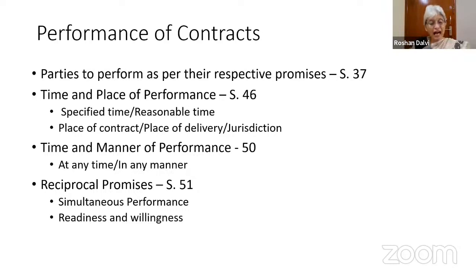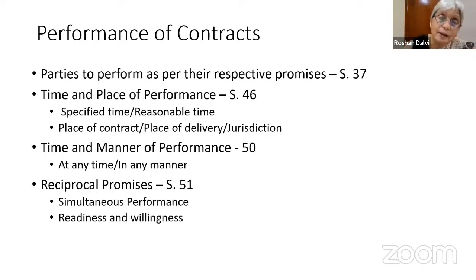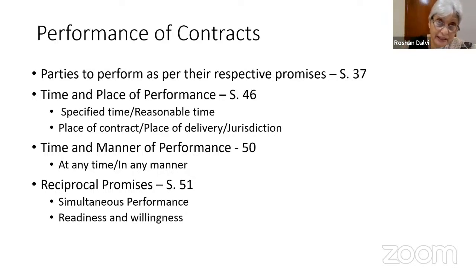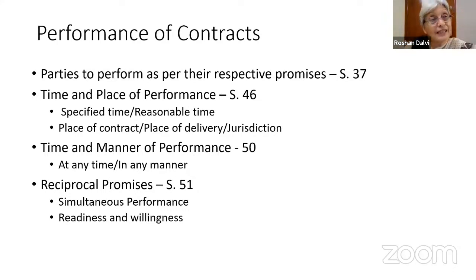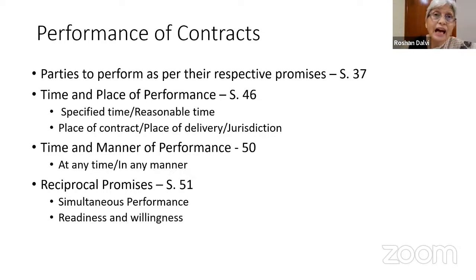When there are large, long contracts with many clauses, as is usually the case in commercial contracts, there are reciprocal promises — one party will have to do something and the other party will get a benefit. If either party does not perform their part of the reciprocal promises, the contract is gone. There is a breach and the other party can refuse to perform. For reciprocal promises, there should be readiness and willingness to perform. In specific performance suits, the averment is of readiness and willingness to perform.